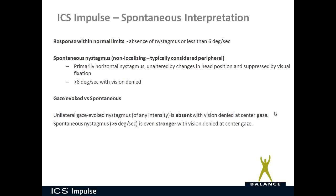To summarize the difference between gaze evoked versus spontaneous: unilateral gaze-evoked nystagmus can be any intensity — any amount is considered abnormal — and it is absent with vision denied at center gaze. Spontaneous nystagmus greater than 6 degrees per second is even stronger with vision denied at center gaze. Hopefully that helps you understand gaze and spontaneous tests, and enjoy the new module in ICS Impulse.